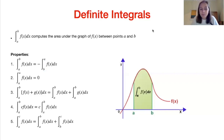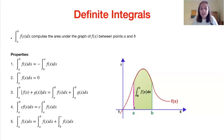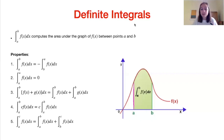Second property: the integral from a to a of f of x dx is essentially finding the area of a line — and we know a line doesn't have an area. Area is two-dimensional, a line is one-dimensional, so the area is infinitesimally small and we say it equals zero. The third property is very similar to the properties for indefinite integrals: if we have the sum of two functions, we can split that into two separate integrals of the two functions, keeping those same integration boundaries.